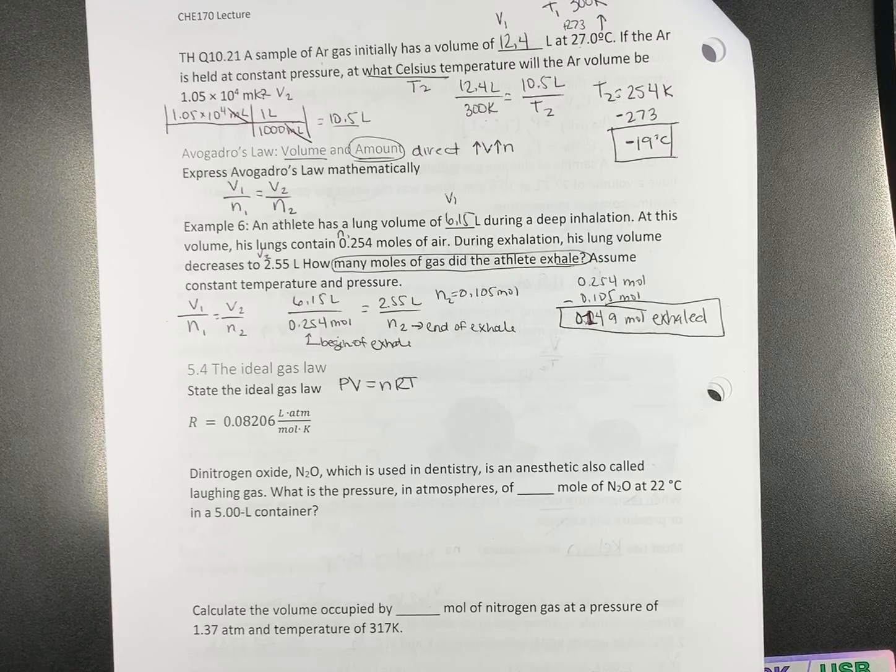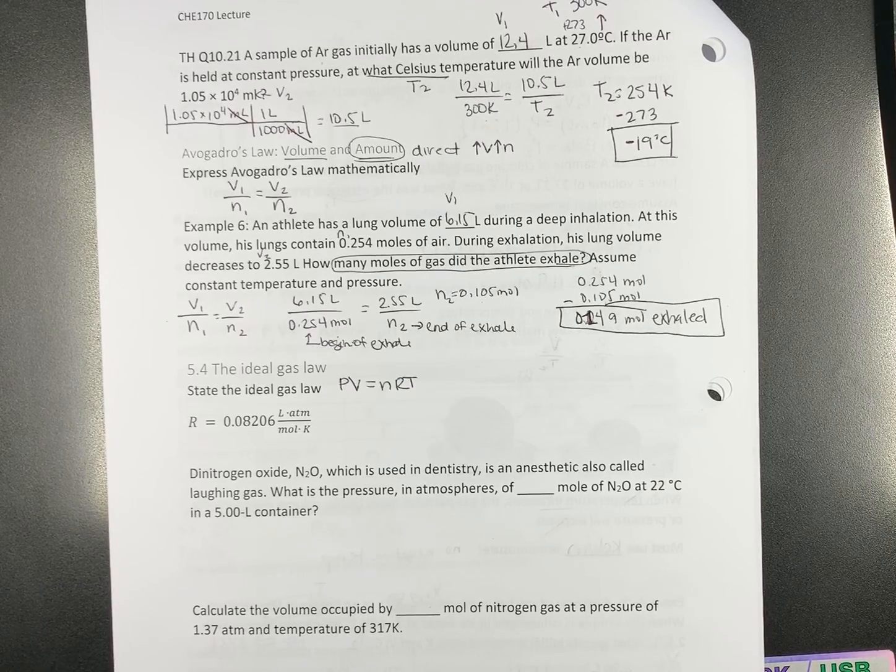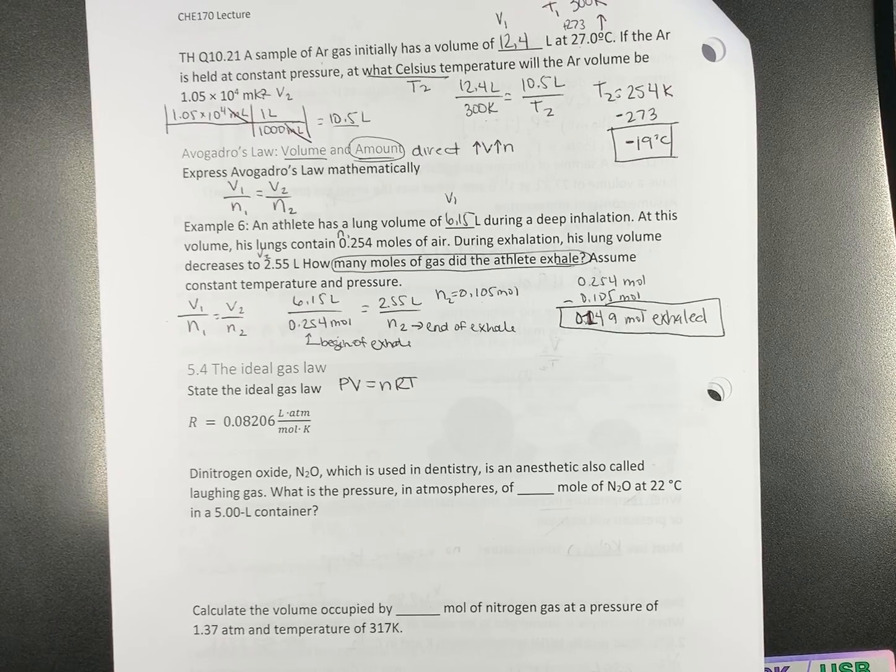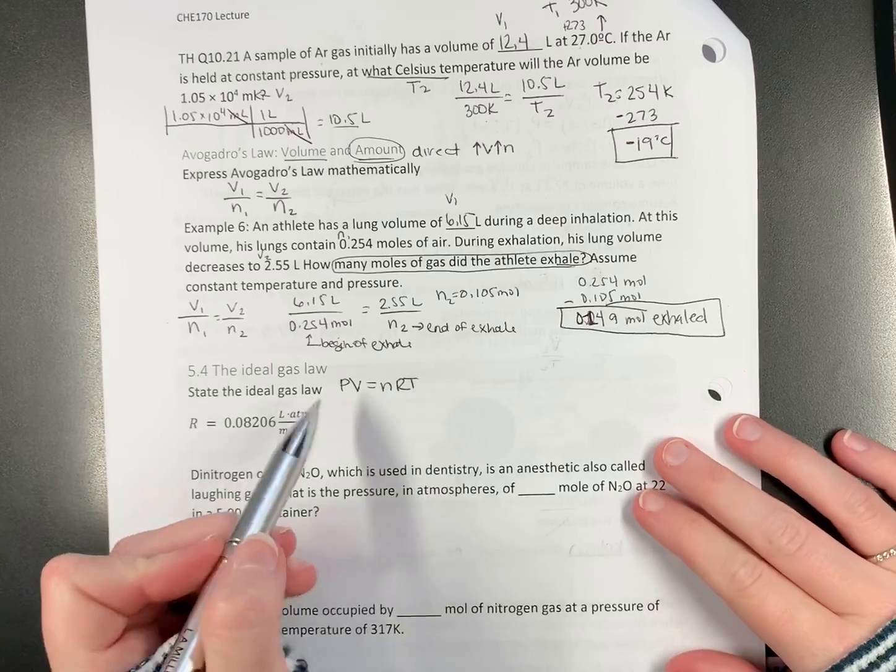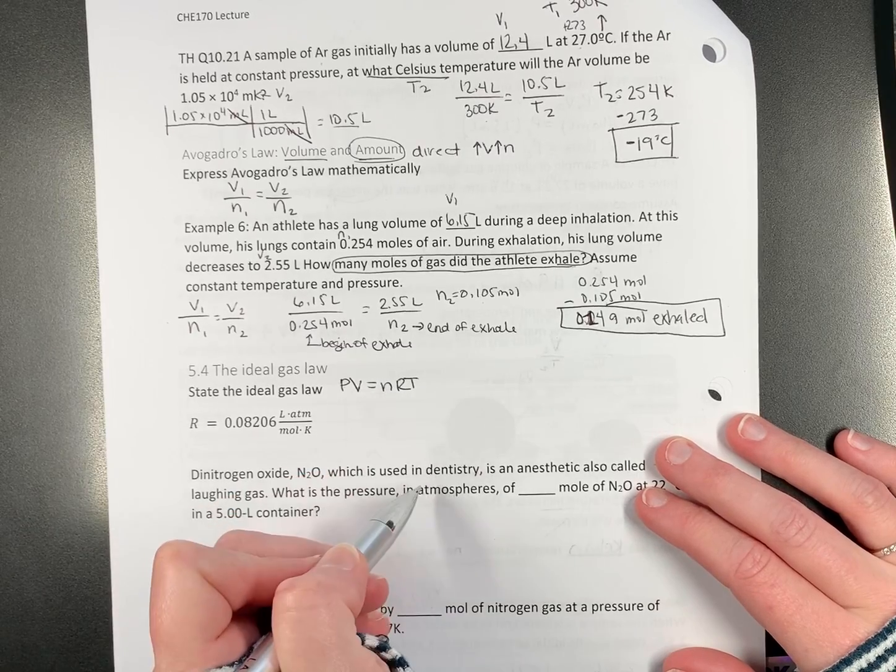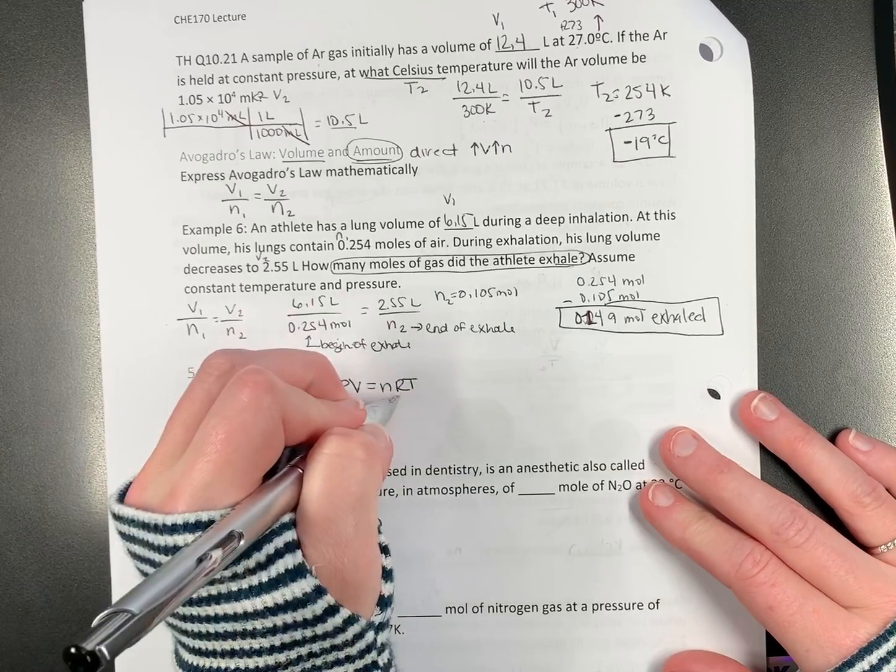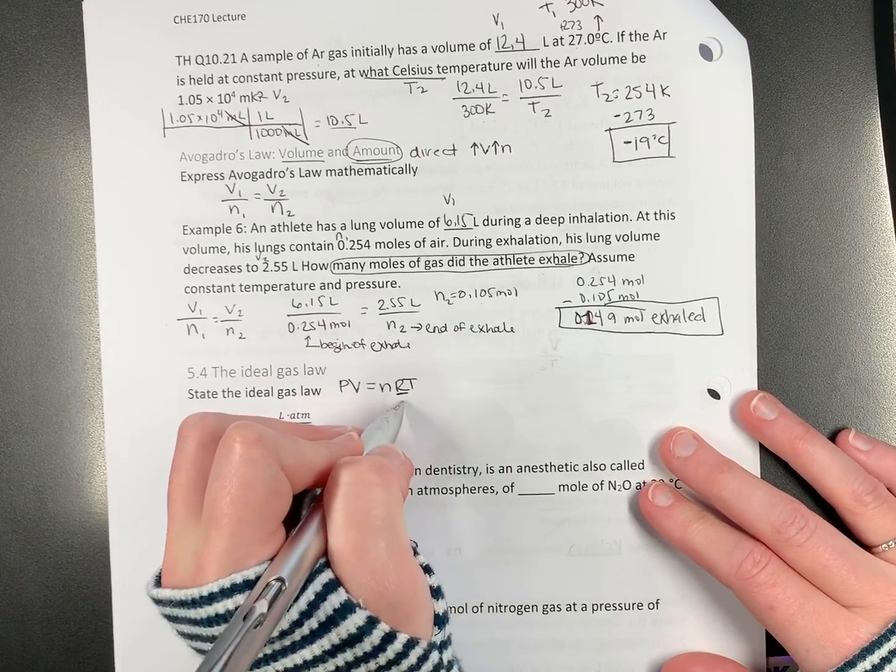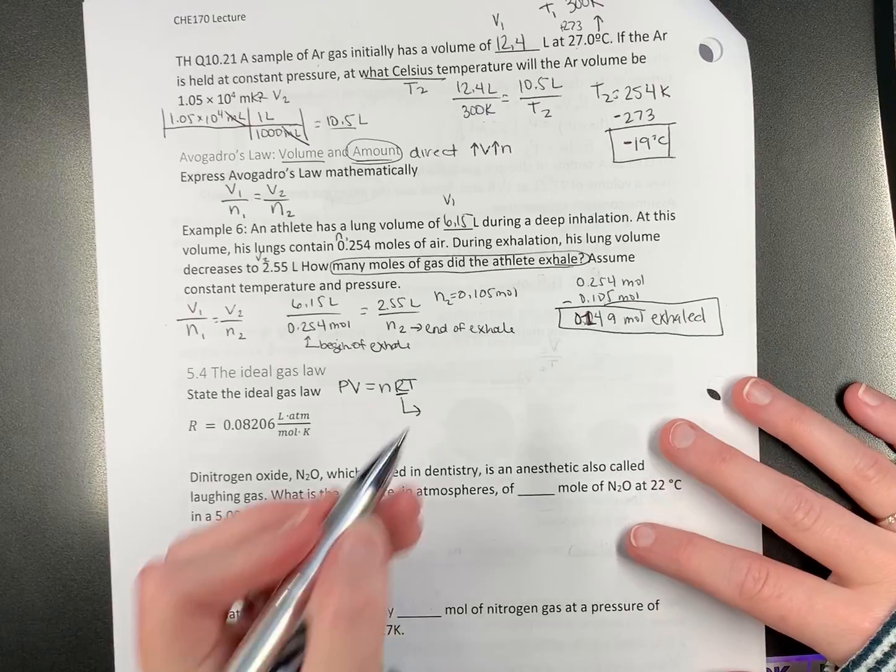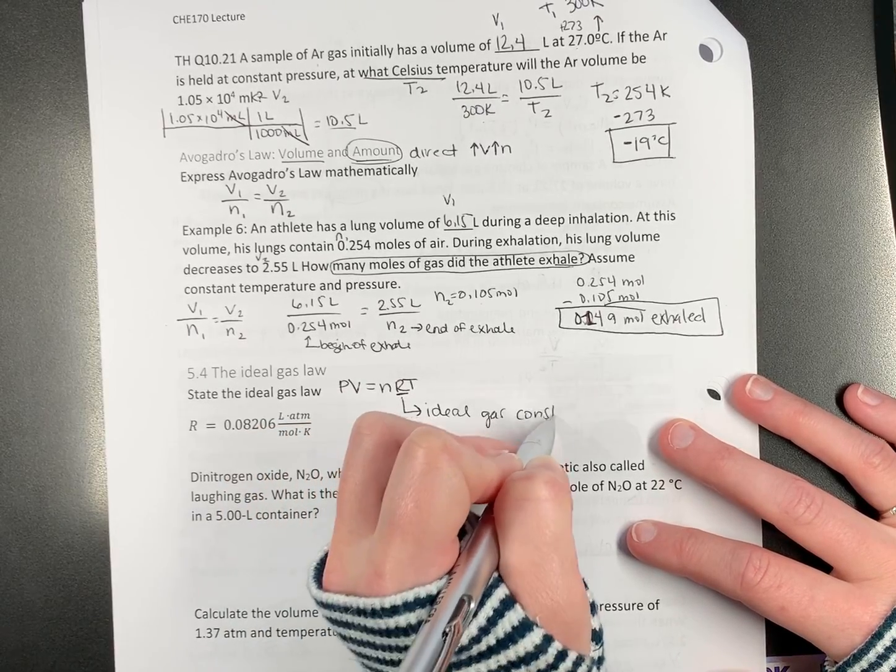So the ideal gas law says PV equals nRT. My high school chemistry teacher always called it PIVNRT. It worked. I never forgot it. PV equals nRT. P stands for pressure. V stands for volume. N stands for moles. T stands for temperature. And what the heck is this R? R is a constant. It's a proportionality constant, and it is known as the ideal gas constant.